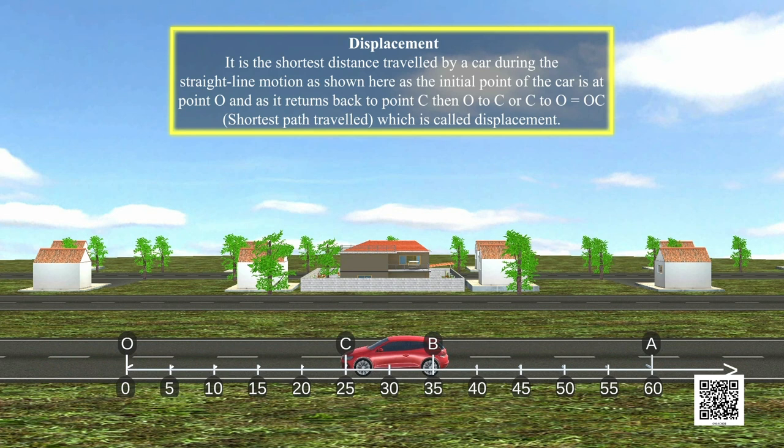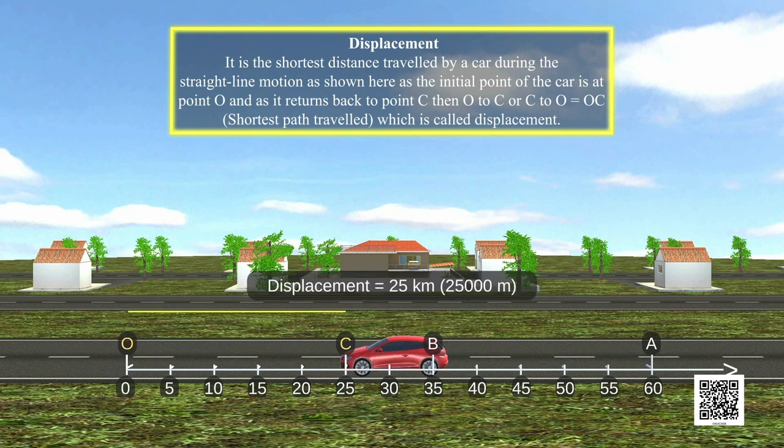Then, O to C or C to O equals OC. Shortest path travelled, which is called displacement. O to C equals 25 kilometers.